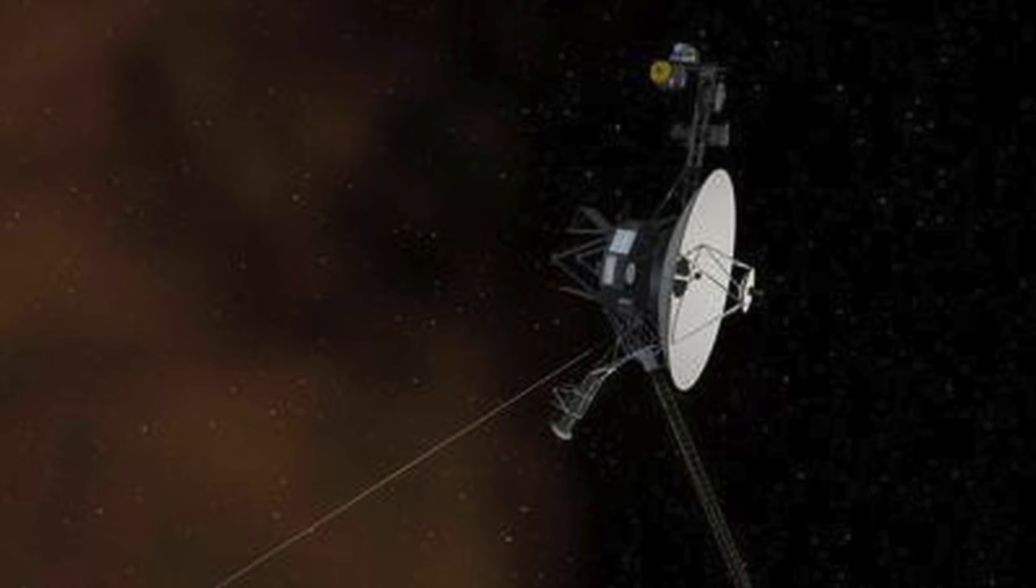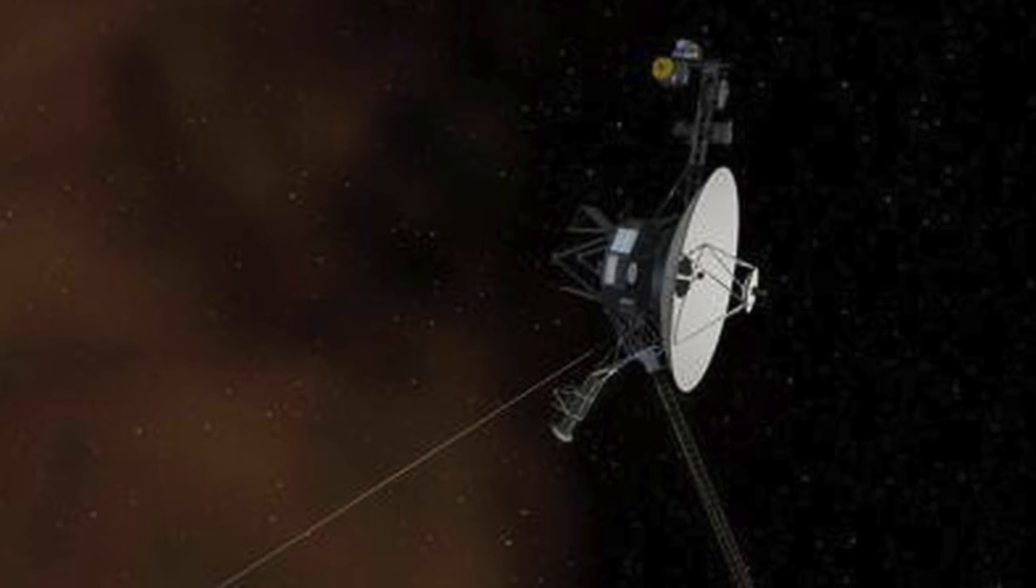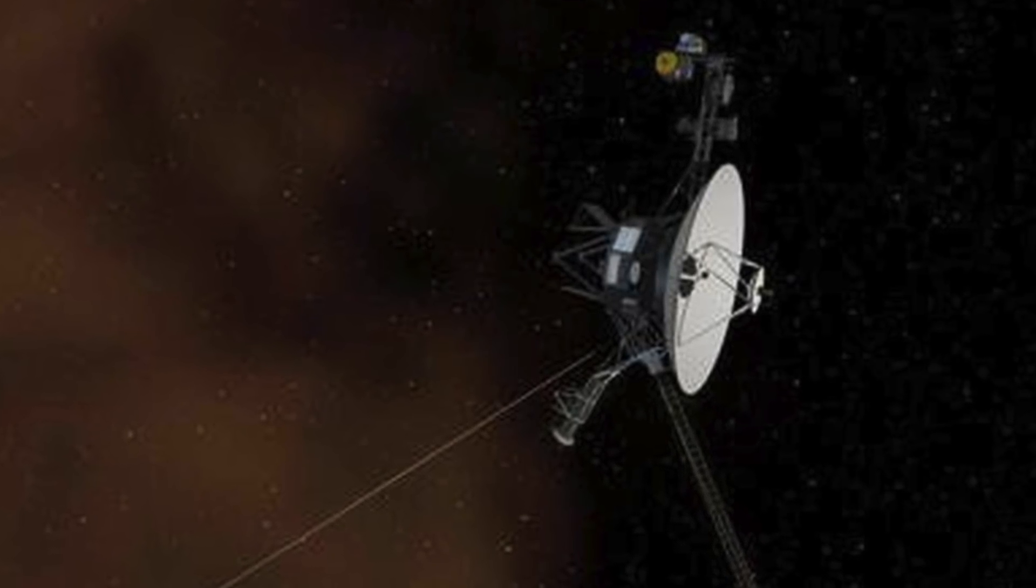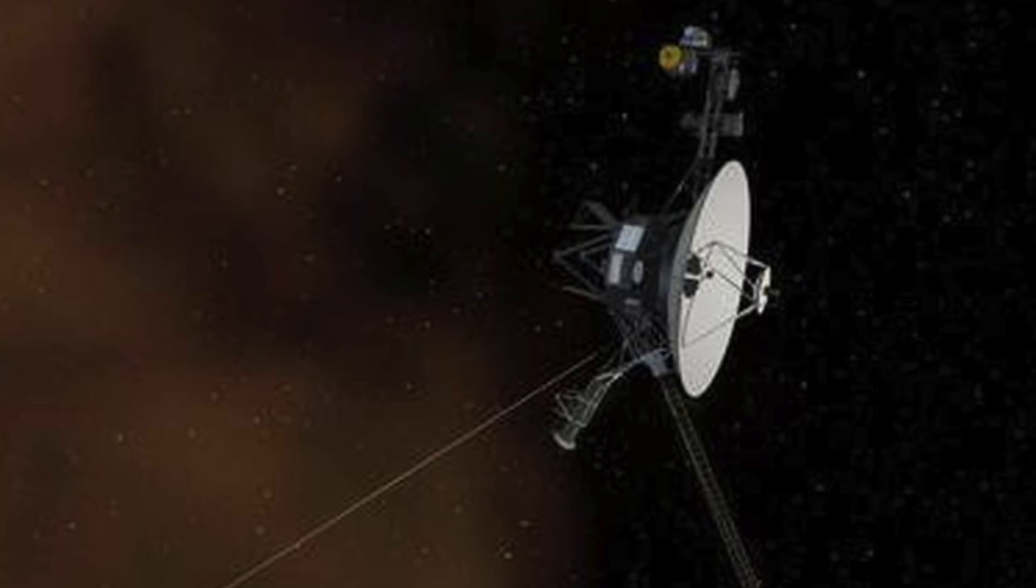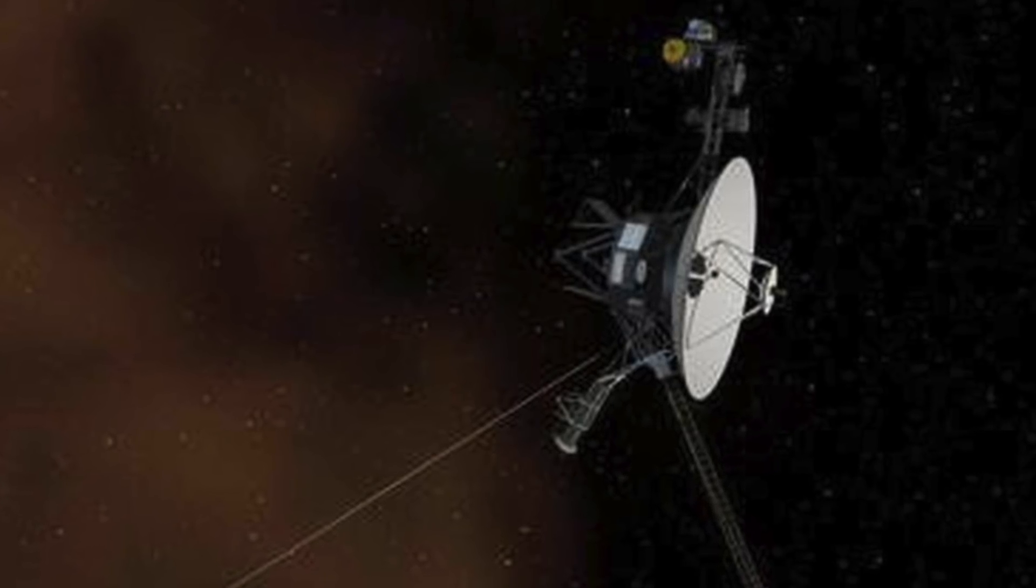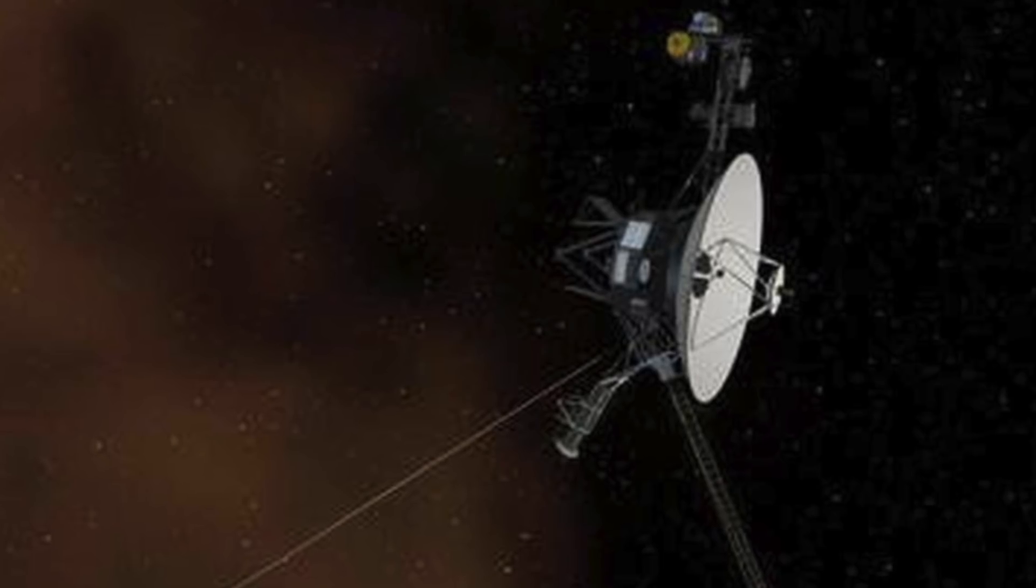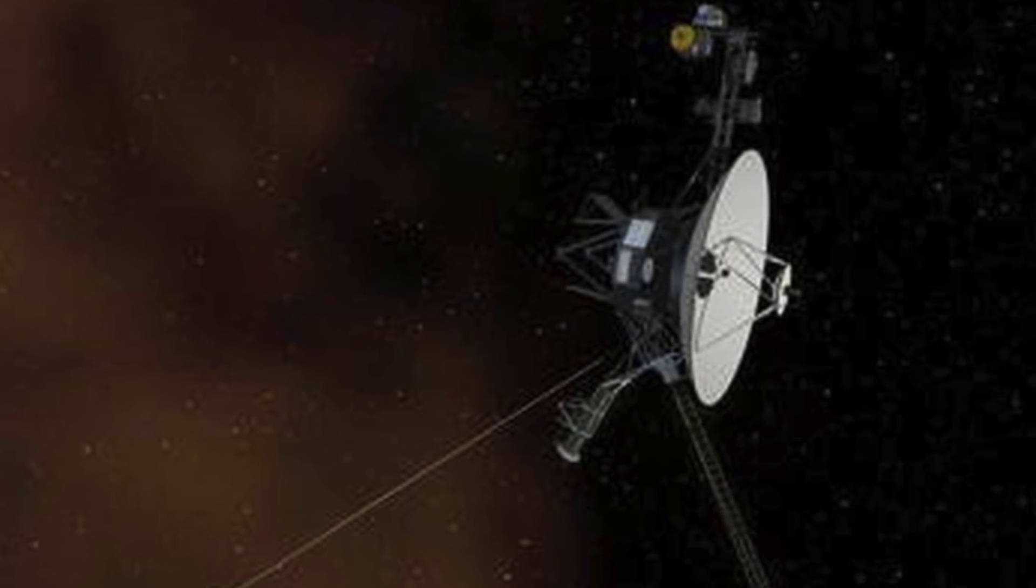Stella Ocker, a Cornell doctoral student in astronomy, said the following: It's very faint and monotone, because it's in a narrow frequency bandwidth. We're detecting the faint, persistent hum of interstellar gas.